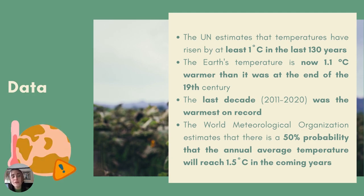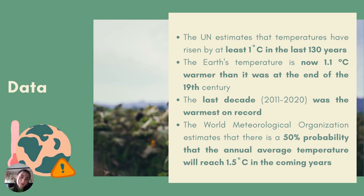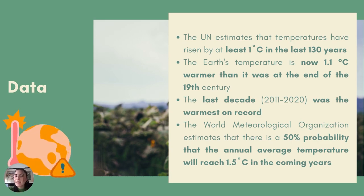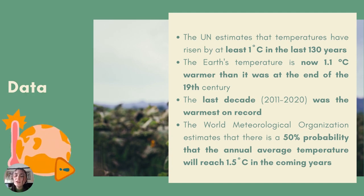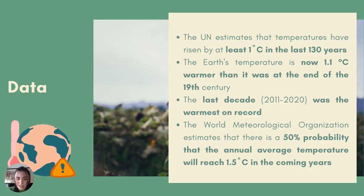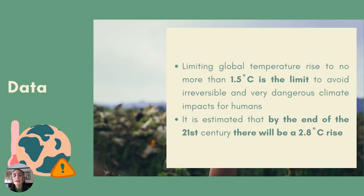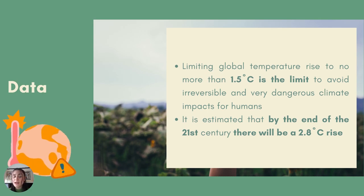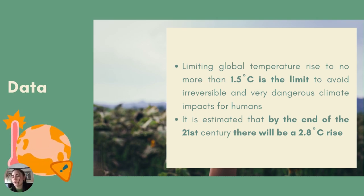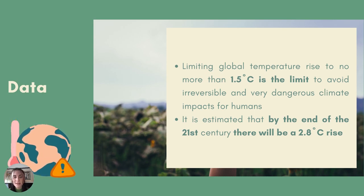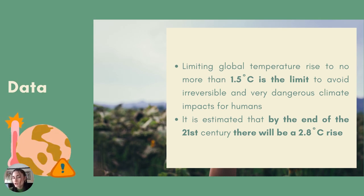The World Meteorological Organization estimates that there is a 50% probability that the annual average temperature will reach 1.5 degrees in the coming years. The 1.5 degrees is not a random figure, because if we reach that number, the negative consequences will be highly damaging. According to the latest United Nations reports and thousands of scientists, limiting global temperature rise to no more than 1.5 degrees is the threshold to avoid irreversible and very dangerous climate impacts for human beings. However, it is estimated that by the end of the 21st century, there will be an increase of 2.8 degrees.